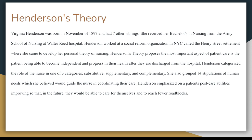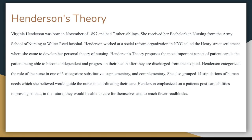What is Virginia Henderson's theory, and who was Virginia Henderson? Virginia Henderson was born in November of 1897 and had seven other siblings. She received her Bachelor's of Science in Nursing from the Army School of Nursing at Walter Reed Hospital, and she worked as a social reform nurse at a nonprofit organization in New York City called the Henry Street Settlement, where she came to develop her own personal theory of nursing.